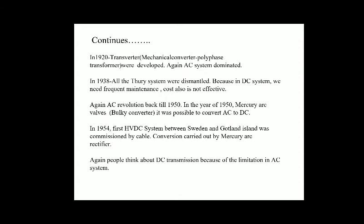In 1938, all the Thury systems were dismantled because DC systems require frequent maintenance and the cost was not effective. There was a return to AC until around 1950, when mercury arc bulbs — bulky converters — made it possible to convert AC to DC. In 1954, the first HVDC system between Sweden and Gotland Island was commissioned by cable, with conversion carried out by mercury arc rectifiers. People again reconsidered DC transmission because of limitations in AC systems.